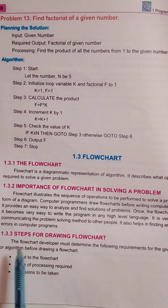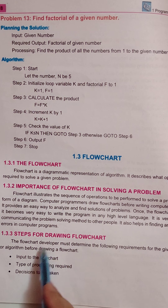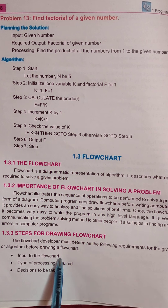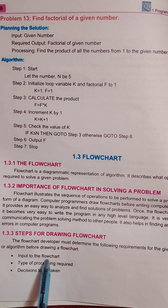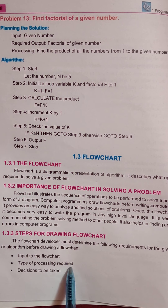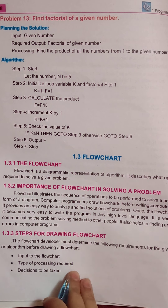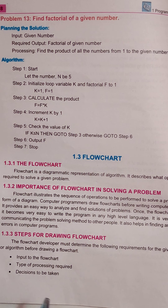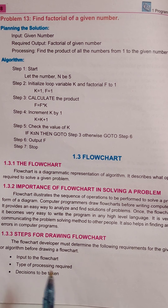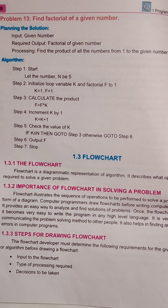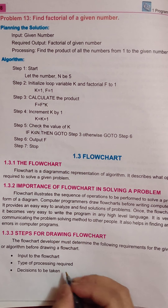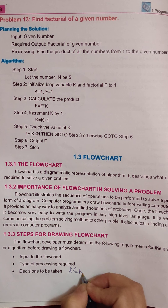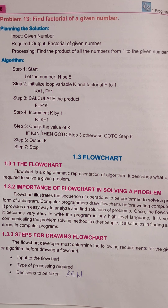Steps for drawing a flowchart: when we draw a flowchart, which steps are required? First, input to the flowchart — just as you give input, you will also give input in a flowchart. Second, the types of processing required — what type of processing is needed, and there is a symbol for processing. Third, decision to be taken — for example, if k is less than or equal to n, this is the decision. You need a specific symbol for decision.